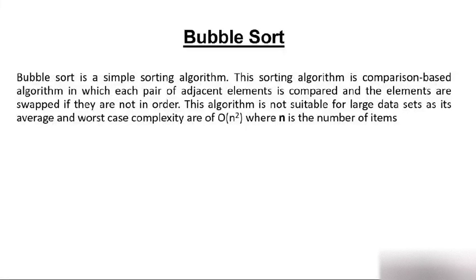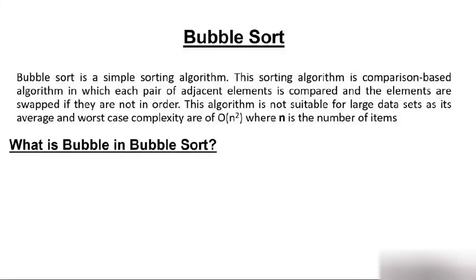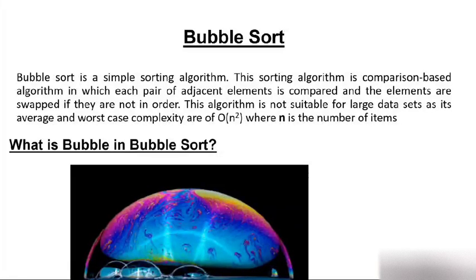Now the question comes: what is the meaning of 'bubble' in bubble sort? The image shows the biggest bubble on top. This is similar to what happens when you wash clothes — you pour washing powder into a bucket and bubbles start forming. The largest bubble rises to the top. Similarly, when sorting an array, during the first pass the largest element takes its final position.